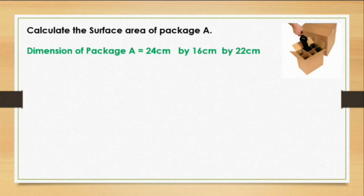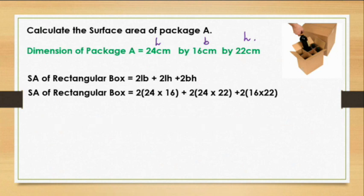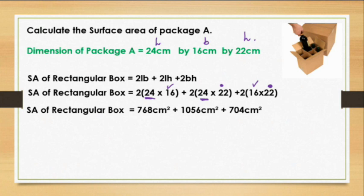Now, they're saying calculate the surface area of package A. They are telling us package A is 24 by 16 by 22. This is length, this is the breadth, and this is the height. What is the equation of surface area? You are definitely going to be given that. You just need to substitute what you have. My length, there is my length here. Substitute it accordingly. Breadth, there's the breadth. Substitute it accordingly. And then the height, I have the height here. Substitute it also accordingly. We substitute. Don't just jump straight to the answer. I think showing your calculations also can get you full marks.